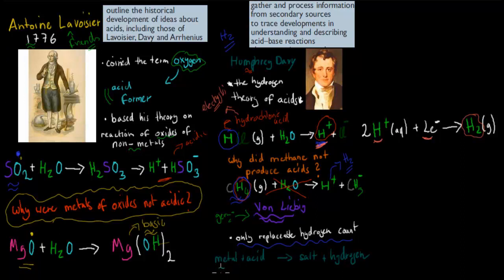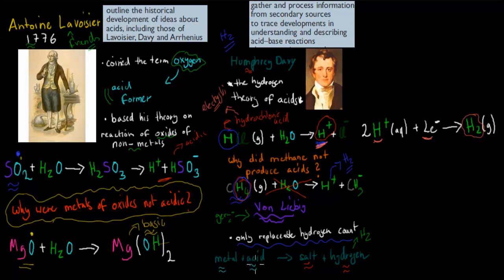Von Liebig used the experiment of metal reacting with acid: when you have a metal in an acid solution, a salt is produced along with hydrogen gas, and that happens for the vast majority of metal-acid reactions. He concluded that the hydrogen gas itself is what makes things acidic. So von Liebig tried to give more support to Davy's explanation — the two theories were closely linked — but it was still wrong.